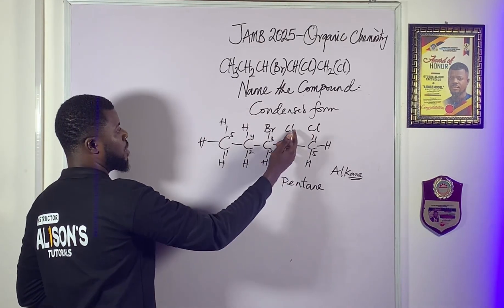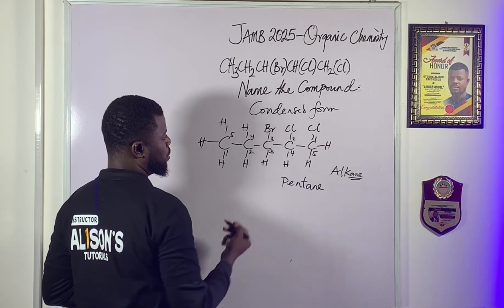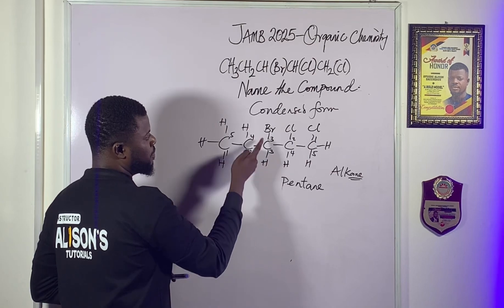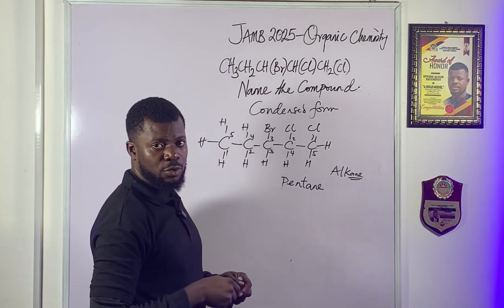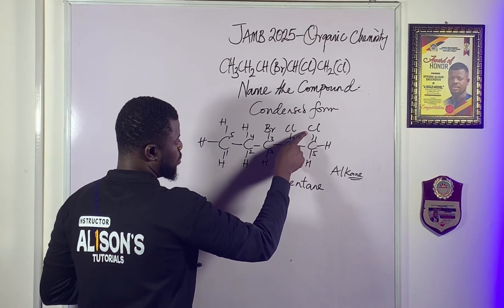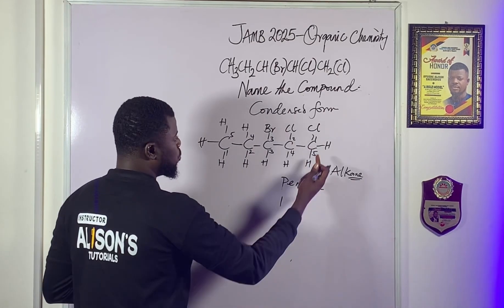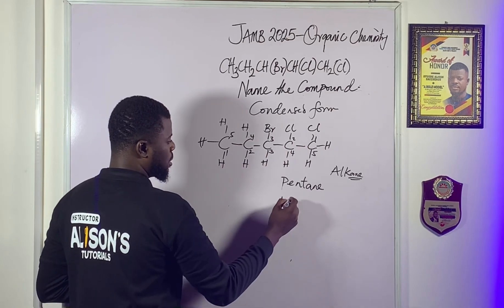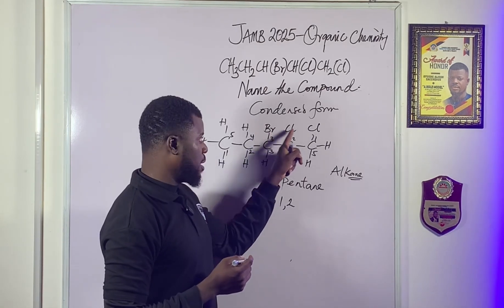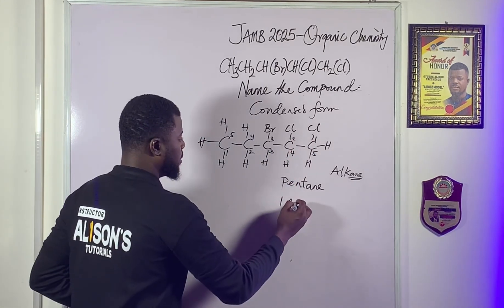Now we have functional groups: we have chlorine. The second rule is you need to start from where you have the substituent or functional group. Starting from this end, chlorine is on the first carbon — that's position one. Moving forward: position two also has a chlorine. So we count one, two for the chlorine substituents.